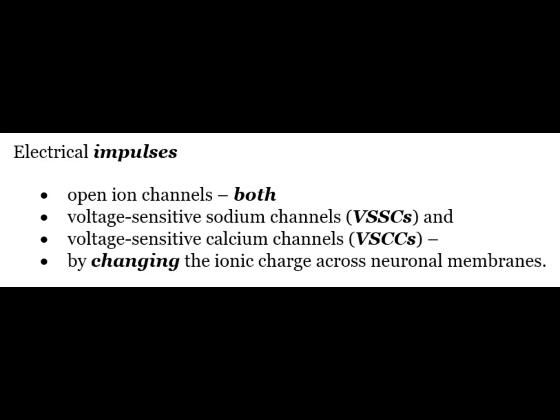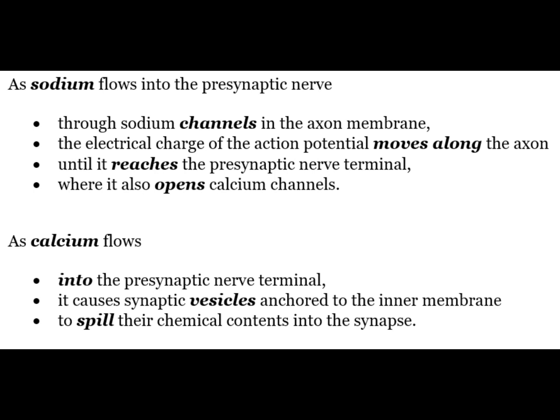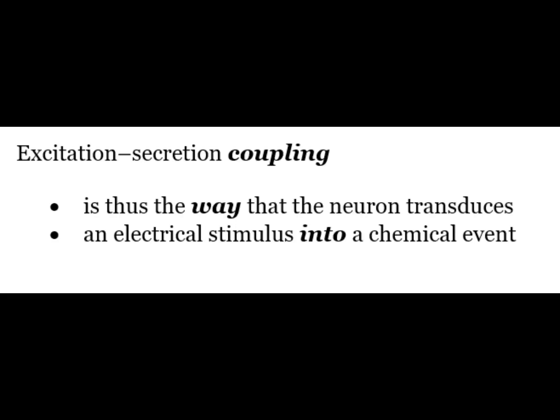In excitation-secretion coupling, electrical impulses open ion channels — both the voltage-sensitive sodium channels and the voltage-sensitive calcium channels — by changing the ionic charge across neuronal membranes. As sodium flows into the presynaptic nerve through the sodium channels in the axon membrane, the electrical charge of the action potential moves along the axon until it reaches the presynaptic nerve terminal where it also opens calcium channels. As calcium flows into the presynaptic nerve terminal, it causes synaptic vesicles anchored to the inner membrane to spill their chemical contents into the synapse. Excitation-secretion coupling is thus the way that the neuron transduces an electrical stimulus into a chemical event.